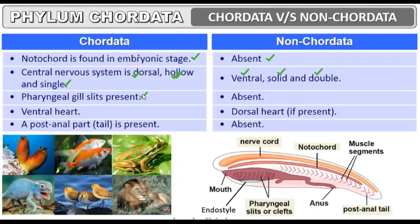Pharyngeal gill slits are pharynx-like organs and are a characteristic feature of Phylum Chordata. These gill slits are absent in non-chordates. The heart in chordates is ventral — on the side of the alimentary canal — not towards the vertebral column. In non-chordates, if a heart is present, it is on the dorsal side and is a very primitive type with no proper structure or function.